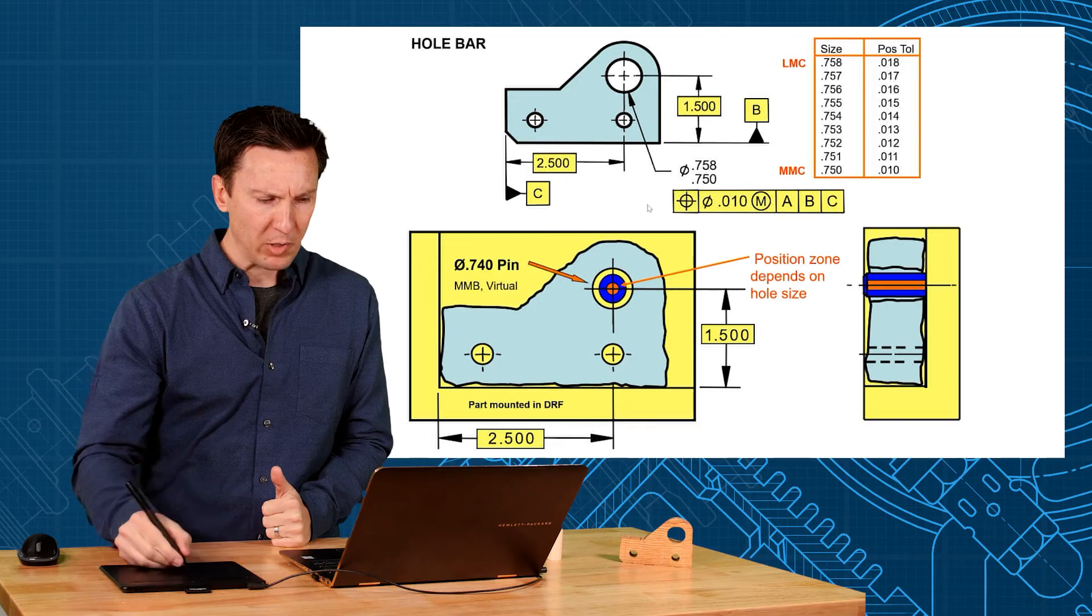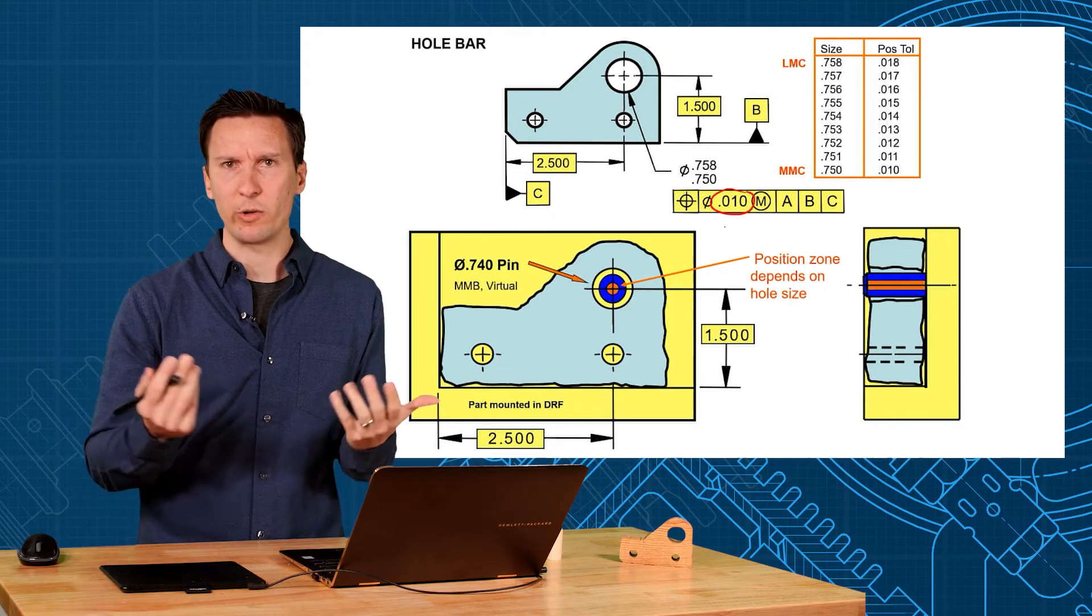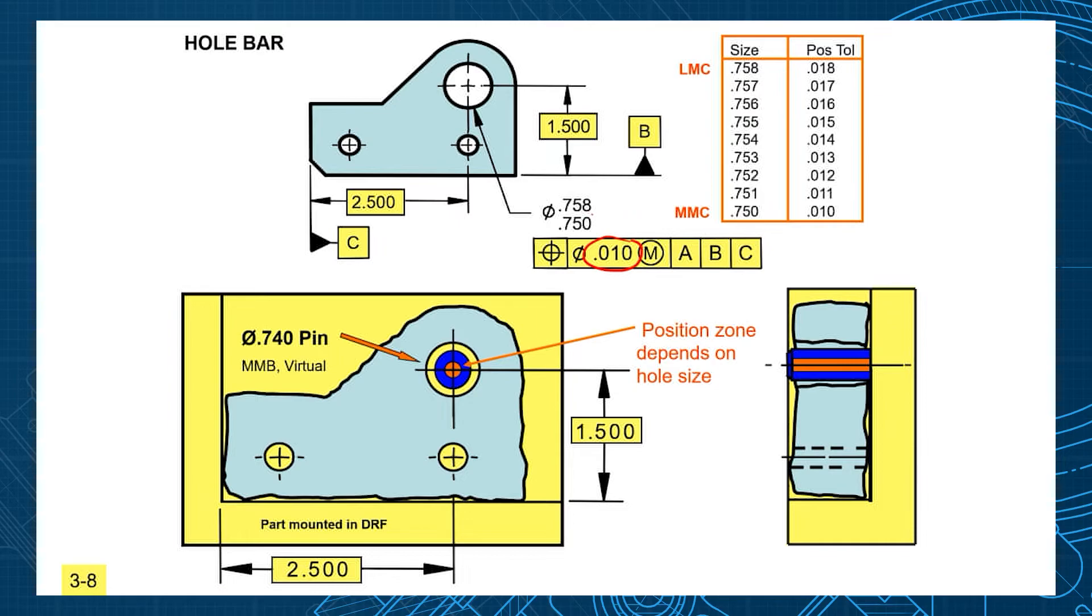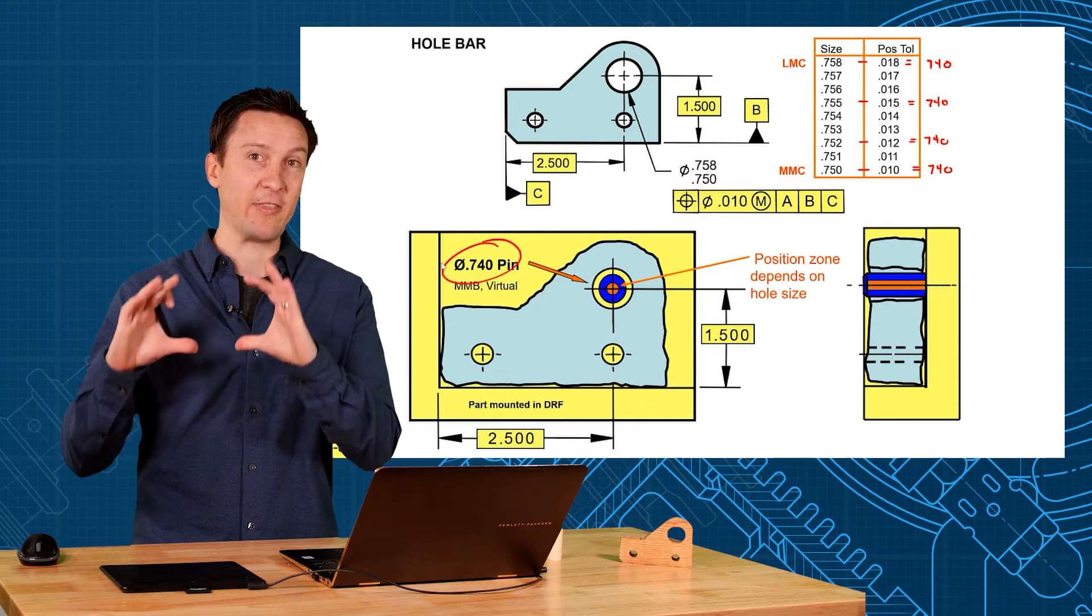Remember, how did we calculate this number, diameter of 10? Where'd that number come from? It's clearance between your smallest hole and your biggest pin. Now if you make the hole bigger, 751, 752, there's more clearance, and so we give that as more position tolerance. It's pretty interesting how it works. What's 750 minus 10? 740. What's 752 minus 12? 740. What's 755 minus 15? 740. If you believe me, they're all going to be 740, and that's what our mating pin is.